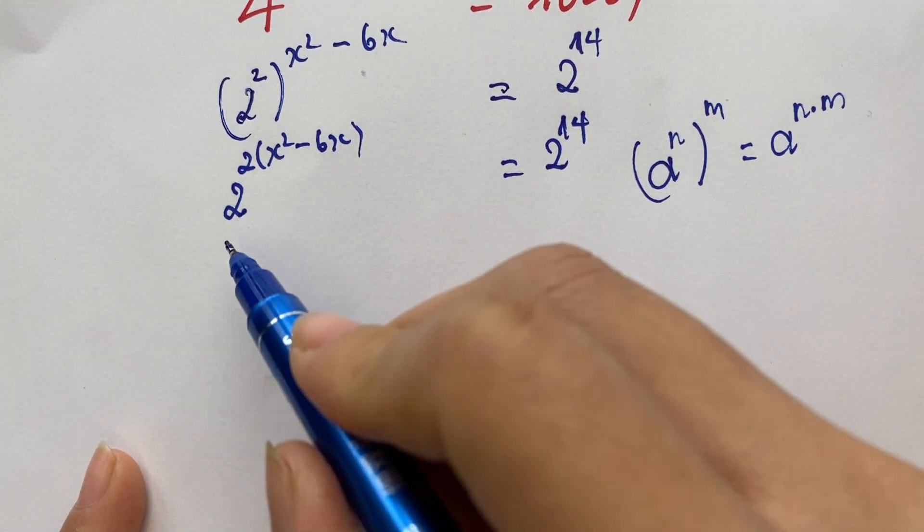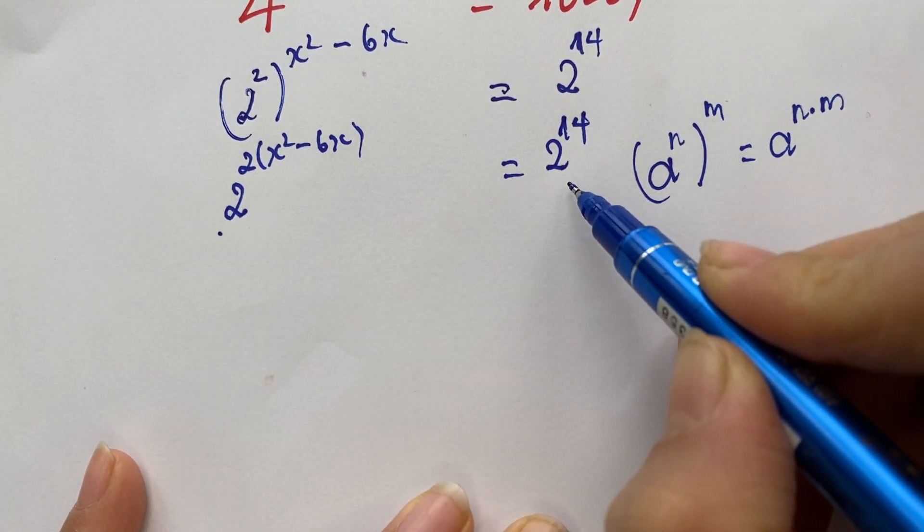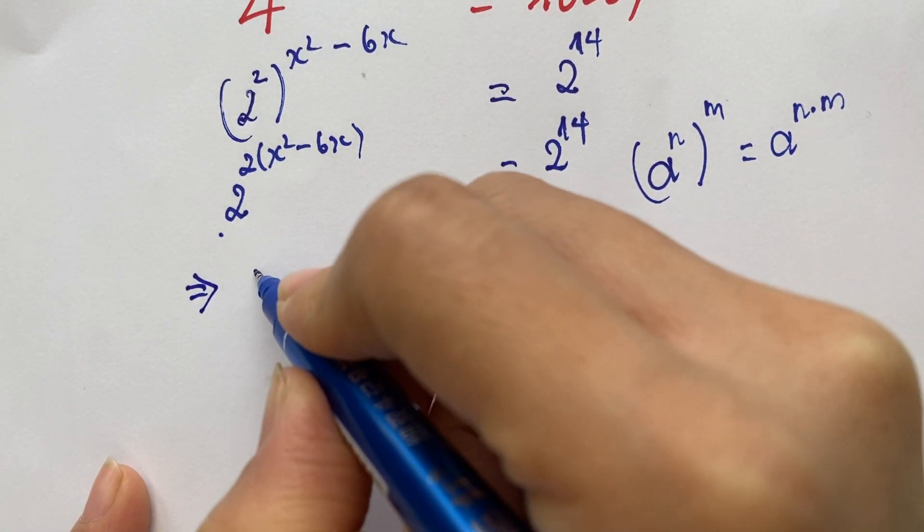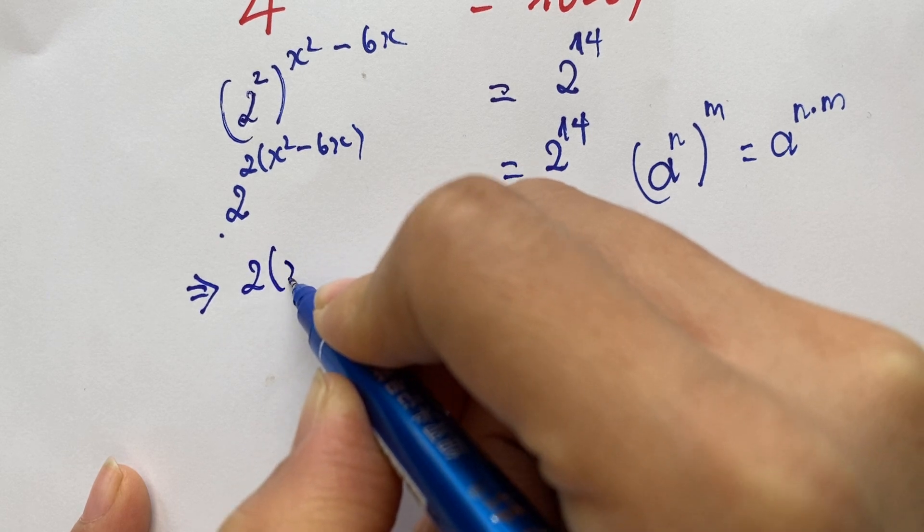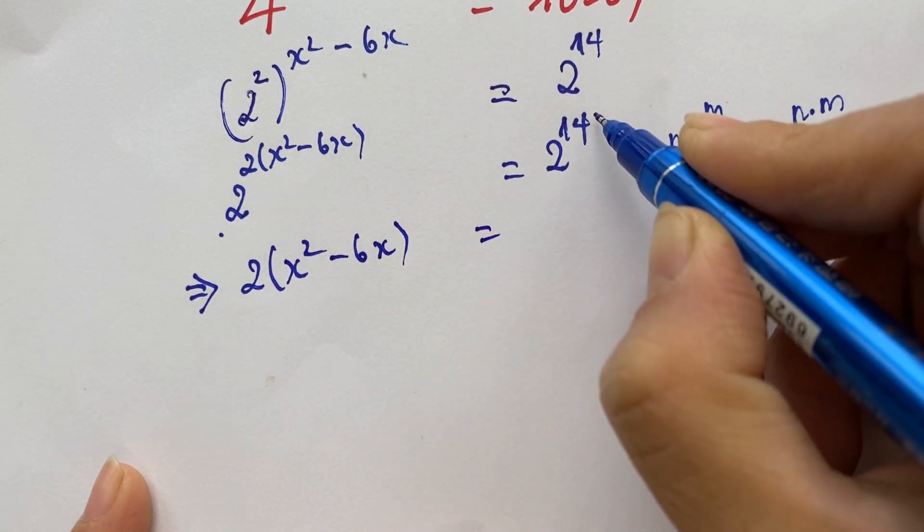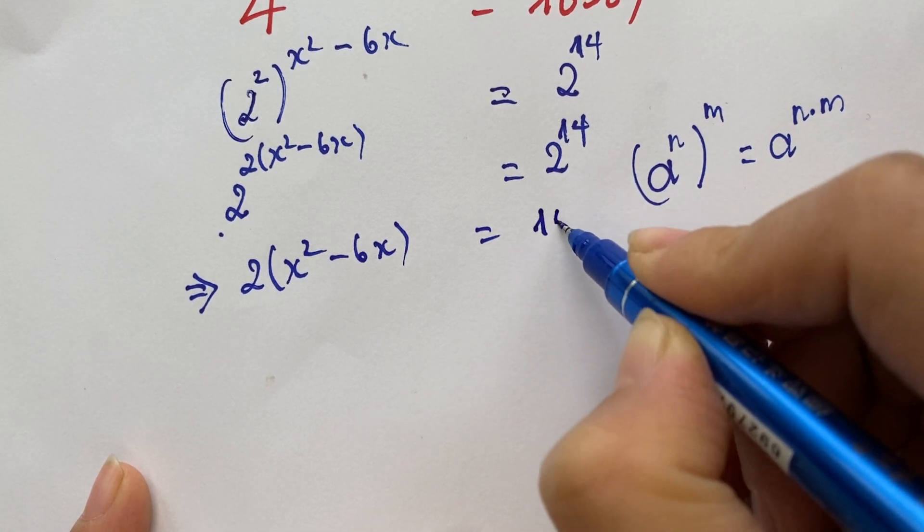Because they have the same base on the left hand side and right hand side, 2 times x squared minus 6x equals 14.